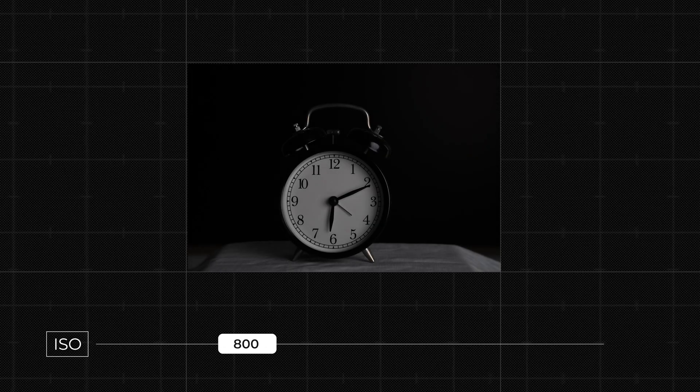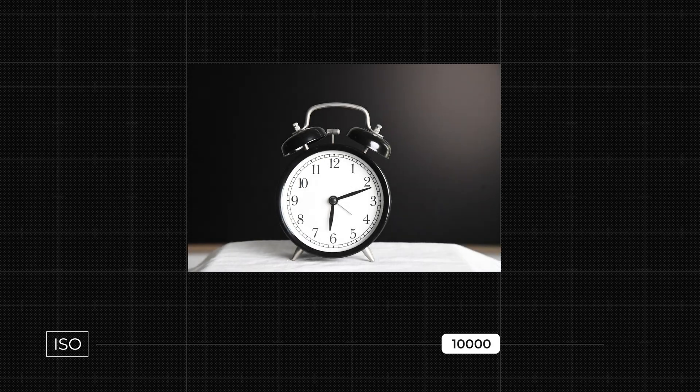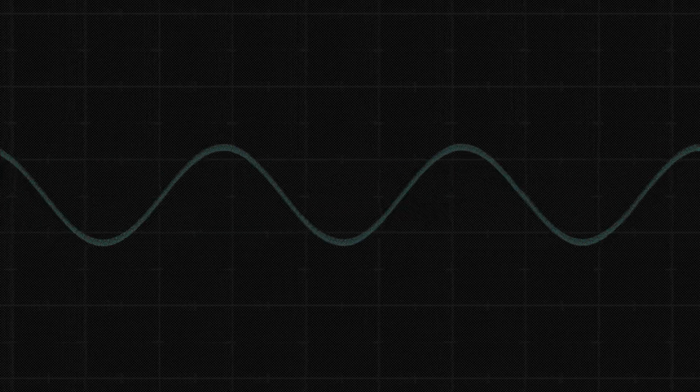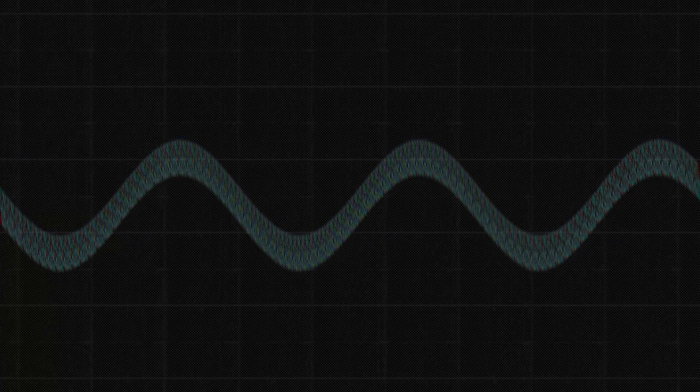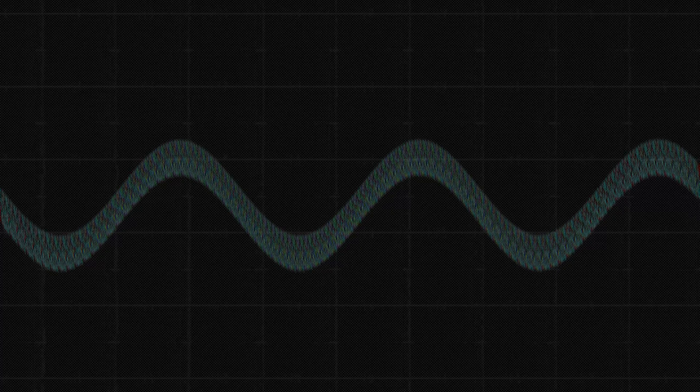Notice how as I'm changing my ISO, my image is getting progressively brighter. Now let's learn a little bit more about ISO and the process of signal creation. When light falls on the sensor, it creates an electrical signal — but that's not all. It also creates some kind of interference, some kind of unwanted effect, which we term as noise.